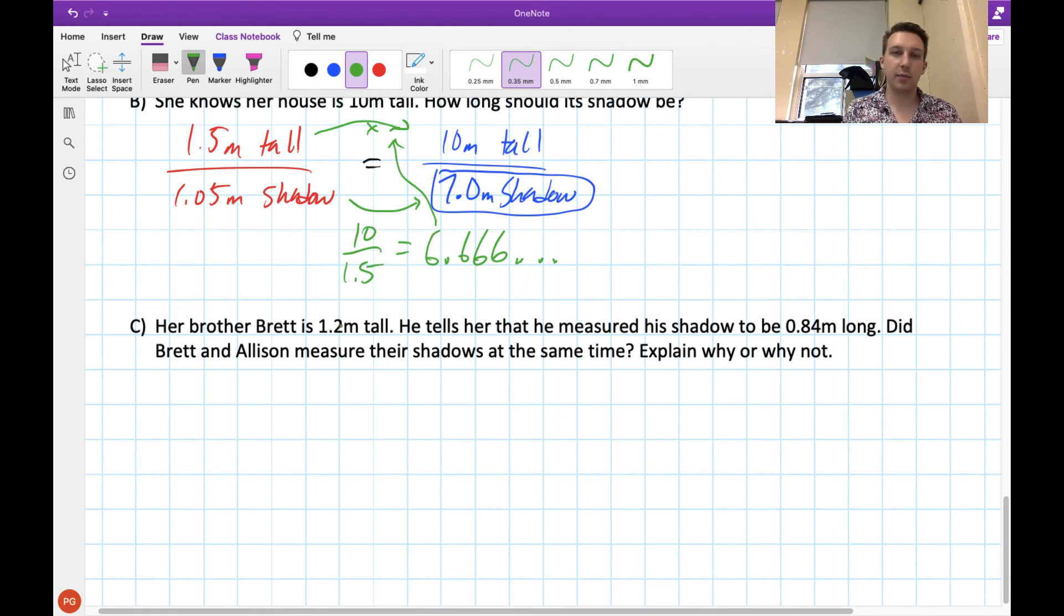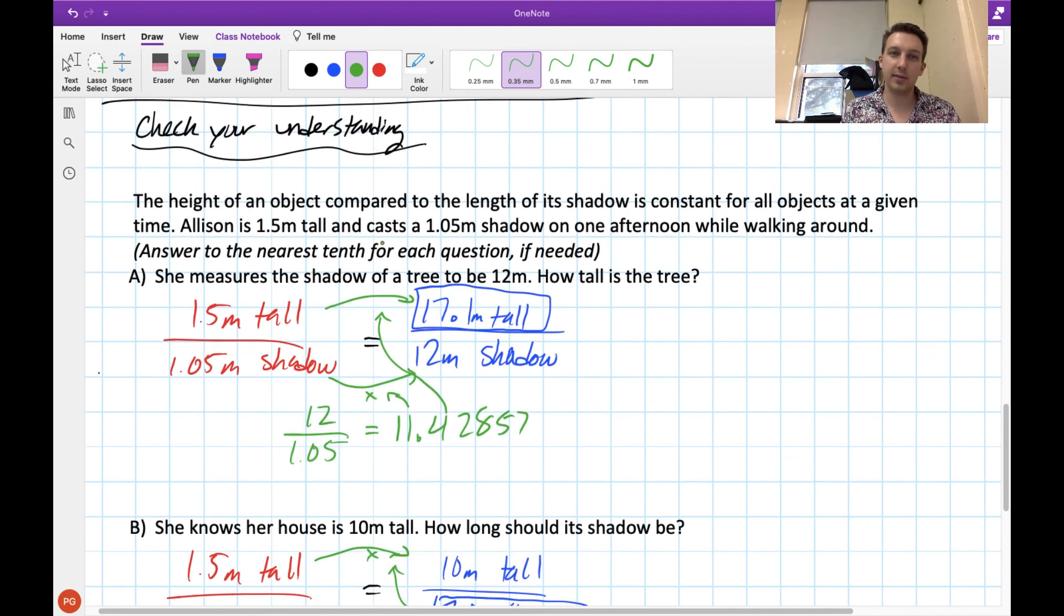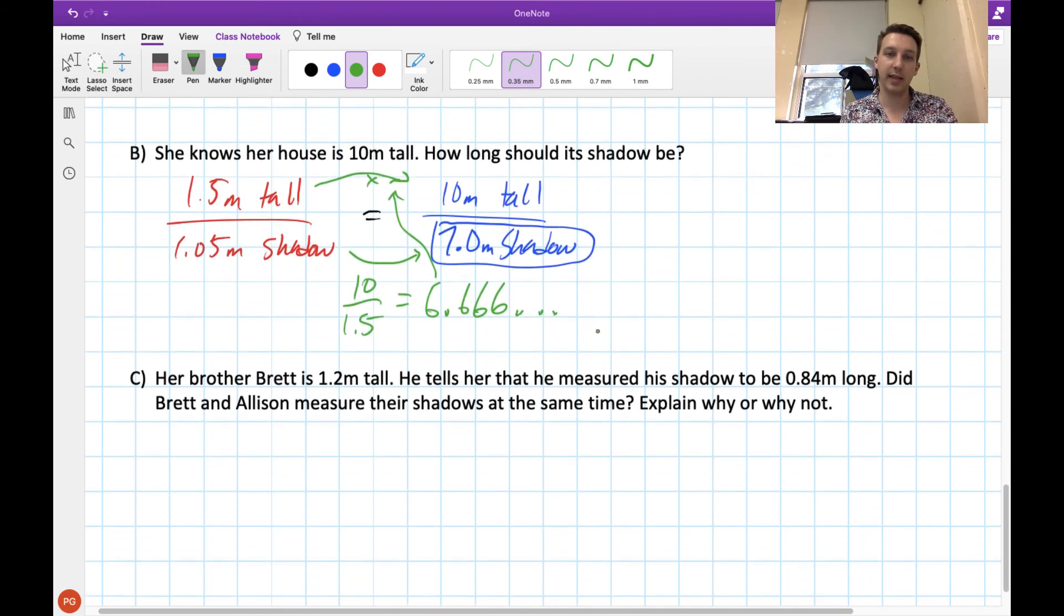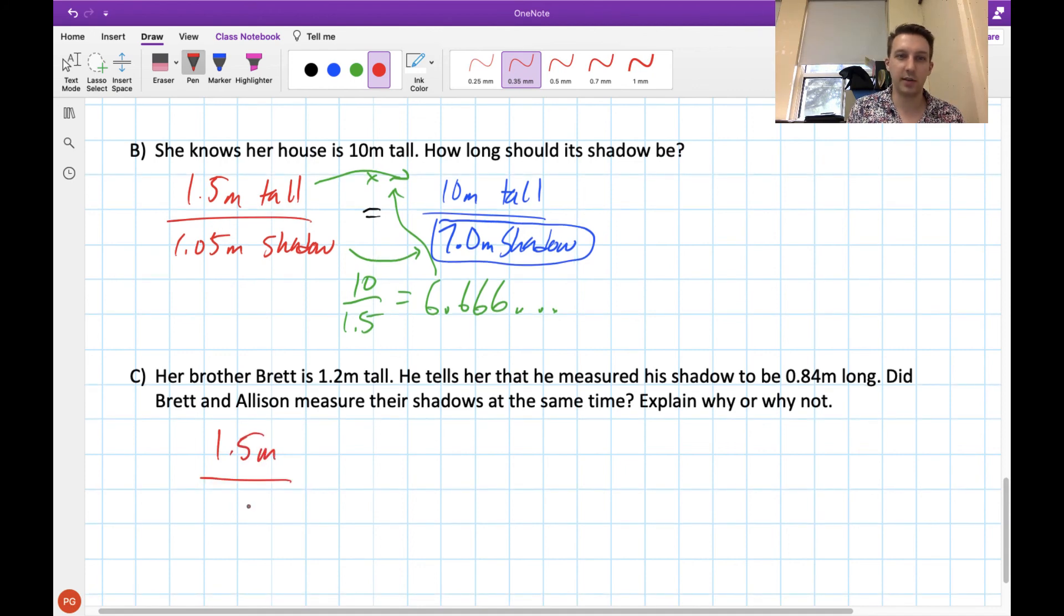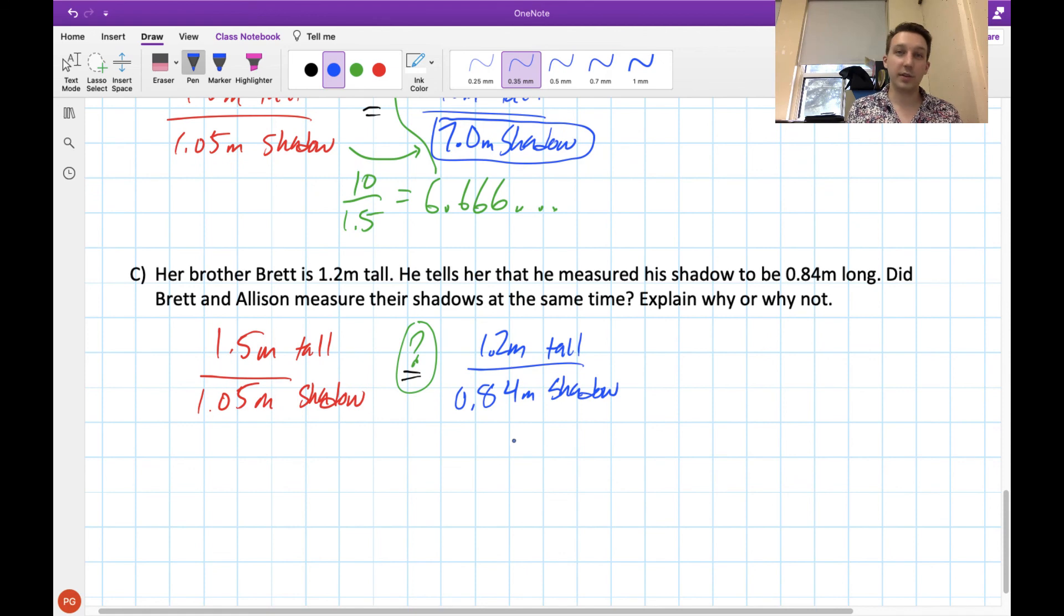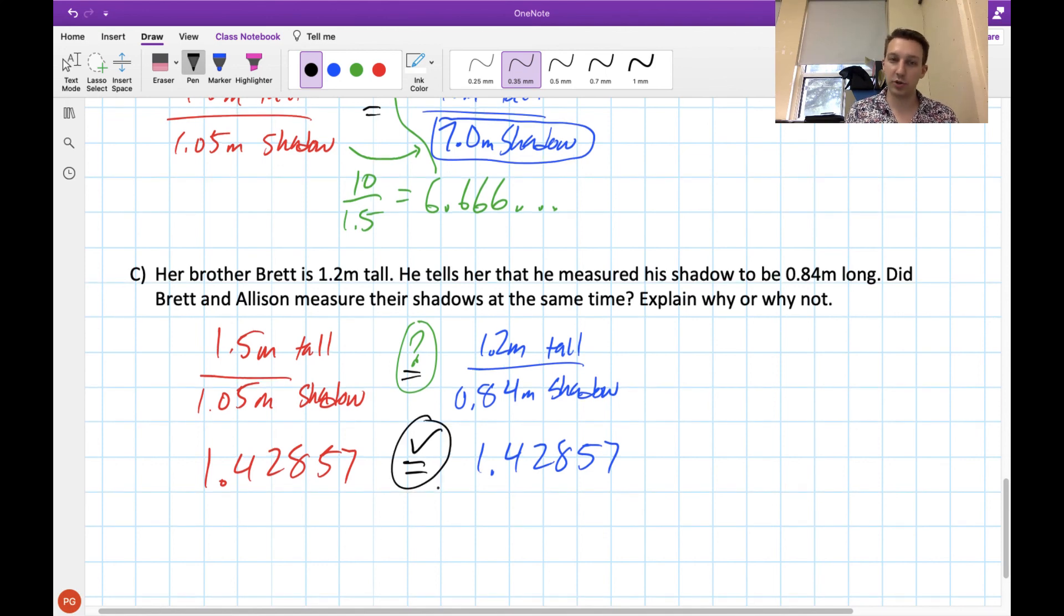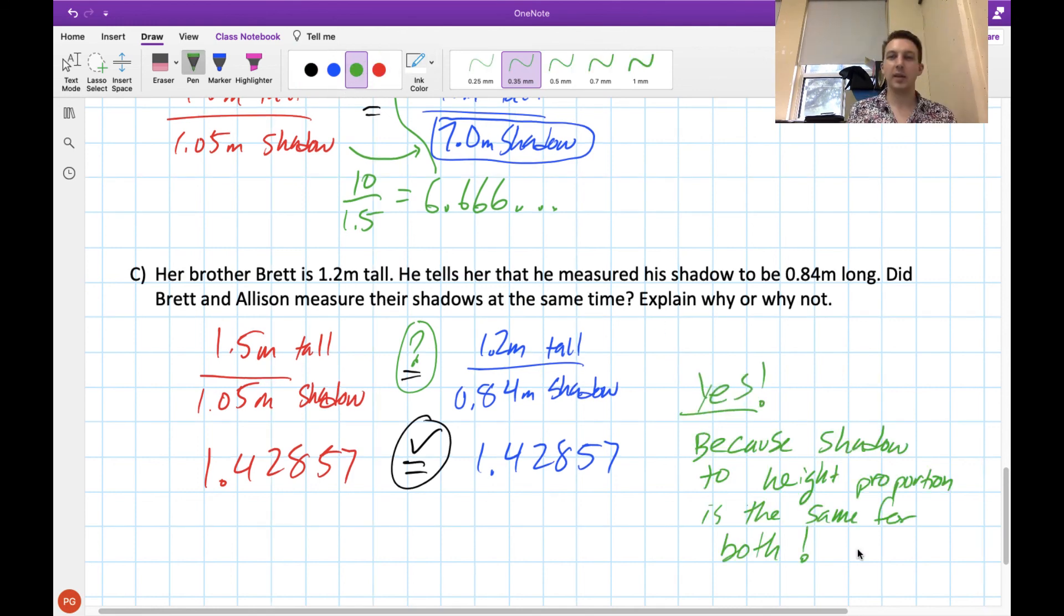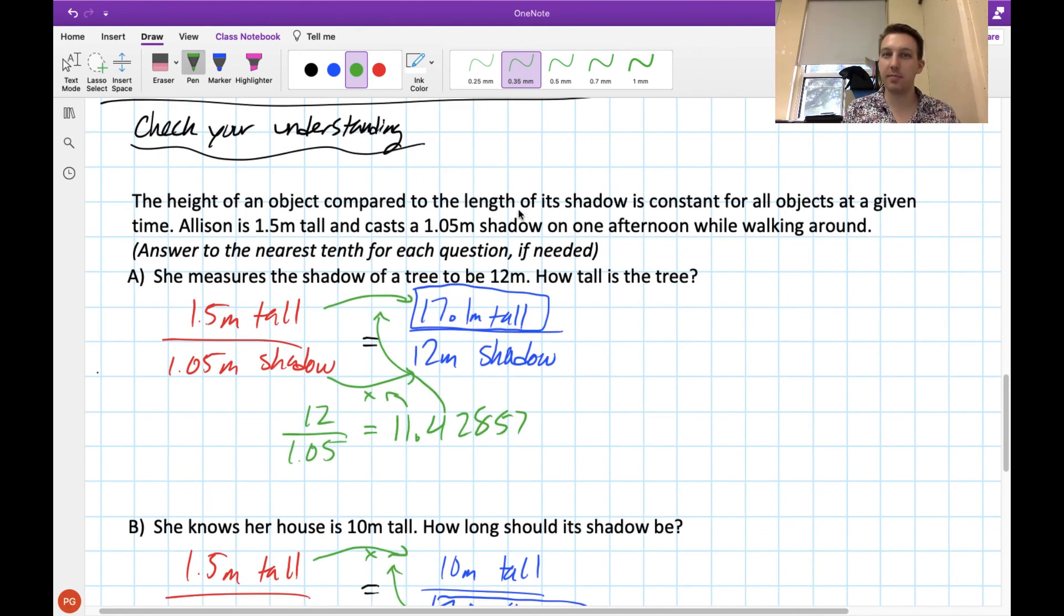For our last question here, what we have to figure out is Brett's shadow to his height the same proportion as Allison's shadow to her height, because it should be constant if the shadow was measured at the same time. Does Allison's ratio of 1.5 meters to 1.05 meters match Brett's ratio of 1.2 meters to 0.84 meters? In order to compare the two, we need to get them down to unit rates, which just means that we take the top and divide it by the bottom. If we do that, what you'll find is we get the same decimal on both sides. So in fact, these are proportional. And if we want to answer the question here, did they measure their shadow at the same time, the answer would be yes. Because the shadow to height proportion is the same for both, we can be confident that they must have measured their shadows at the same time. Remember, the height of an object compared to the length of its shadow is constant for all objects at a given time.